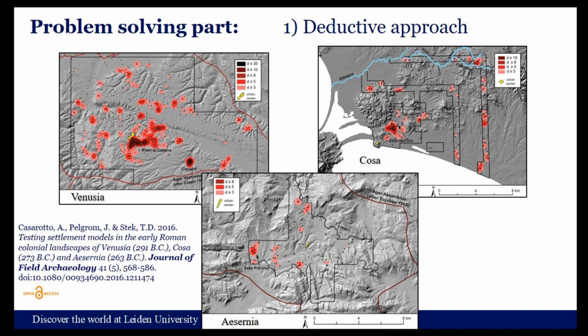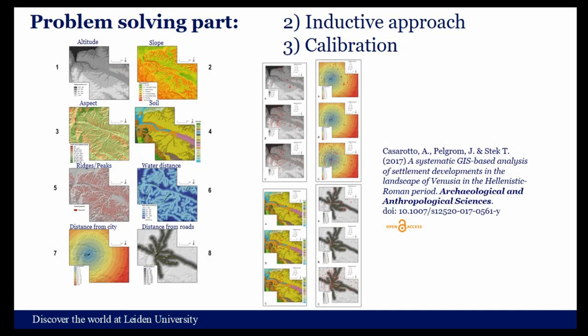By applying a deductive analysis, it was concluded that the nucleated settlement theory is the most probable for early Roman colonial landscapes. To gain further understanding of the logic behind the detected settlement clustering, an inductive analysis was performed. This was carried out only for the territory of the colony of Venusia, because for the other two colonial territories the quantity or quality of available data or metadata were insufficient. The clustering exhibited by Venusia's survey data was compared to natural and cultural factors using both qualitative and quantitative GIS analysis.